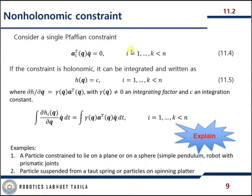Consider a single Pfaffian constraint: a(q)^T * q_dot = 0. If the constraint is holonomic it can be integrated and written as h(q) = c (a constant), where the partial derivative of h with respect to q equals gamma(q) * a(q)^T, with gamma(q) not equal to zero being an integrating factor and c being an integration constant. We can write this constraint in that integrated form.